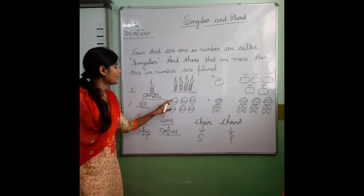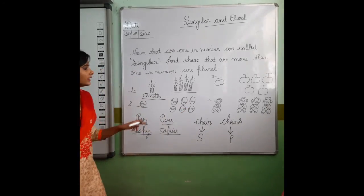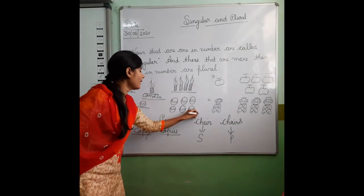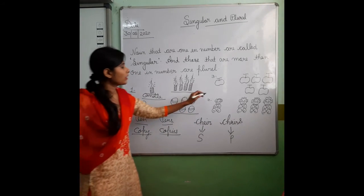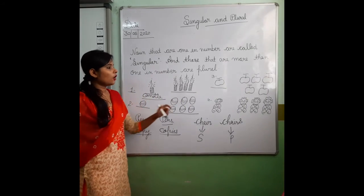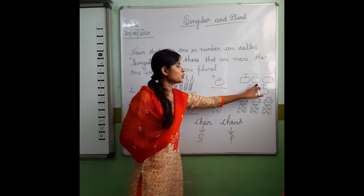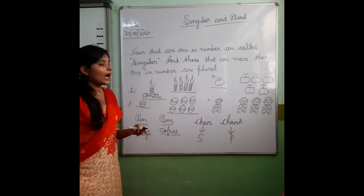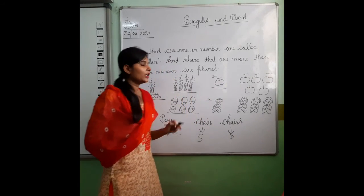One ball — singular number. But one, two, three, four, five, six — these are more than one in number, so plural number. Apple — one apple is here only, so this is singular number. And one, two, three, four, five — these apples are more than one in number, so plural number.